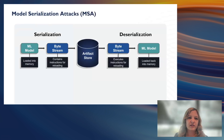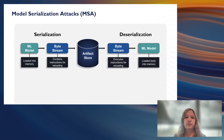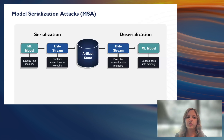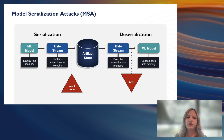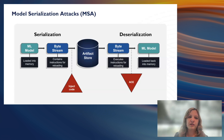The attacker doesn't need to do anything additional — it just executes automatically. And it might not affect the model performance or the output, so the user might not know that anything is happening, but the attack is executing. This is a visualization of the serialization and deserialization process, going from the model to the byte stream, up to the artifact store — which might be something like HuggingFace — and back into the byte stream and model. If a model serialization attack occurs, code is injected into that byte stream, and when you go to deserialize, you have arbitrary code execution.